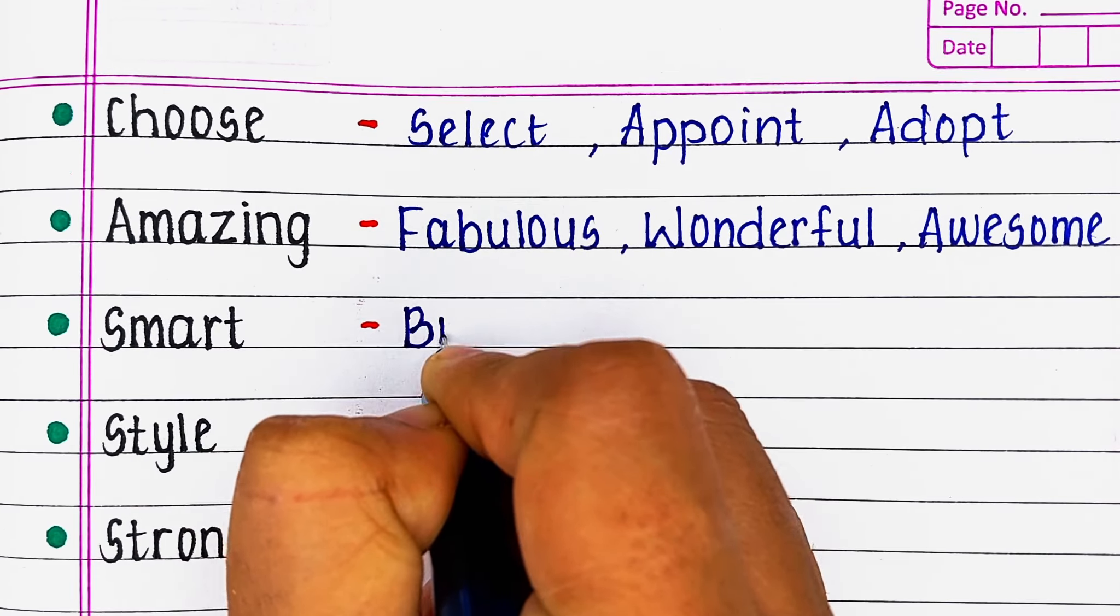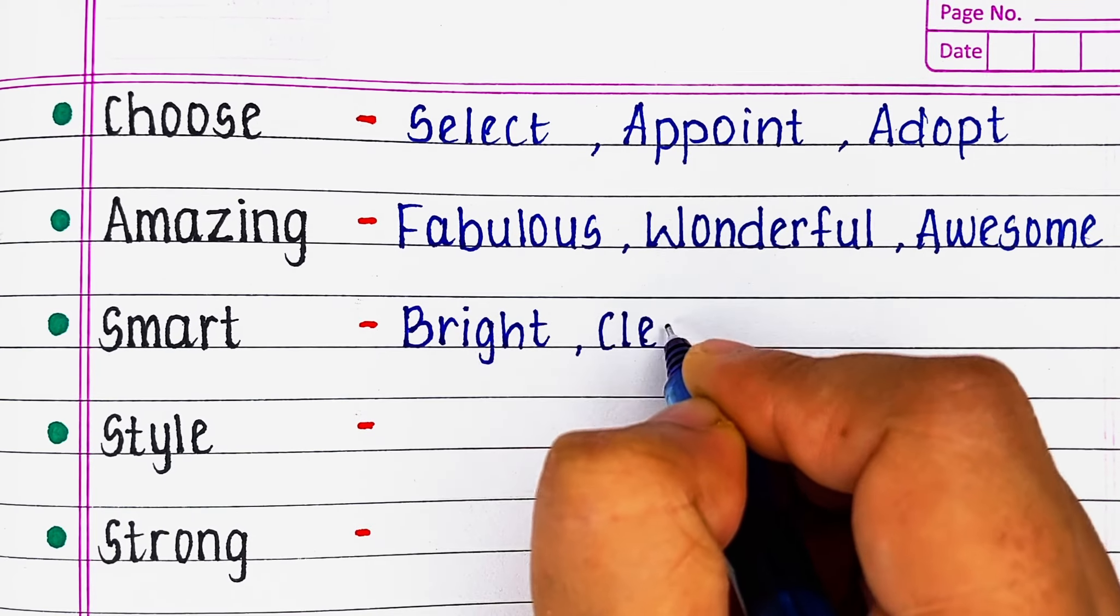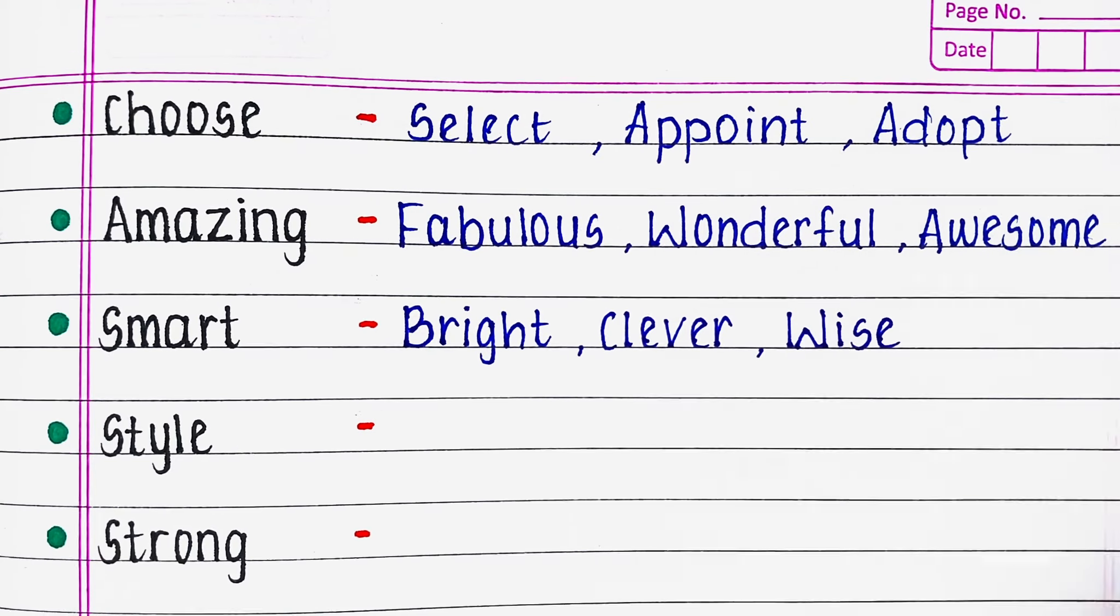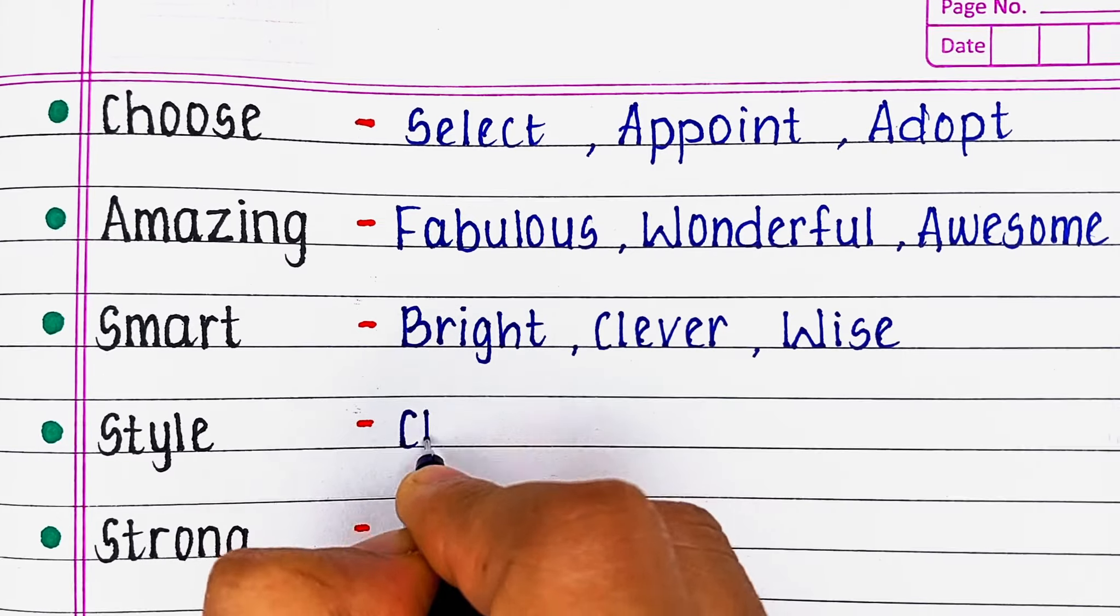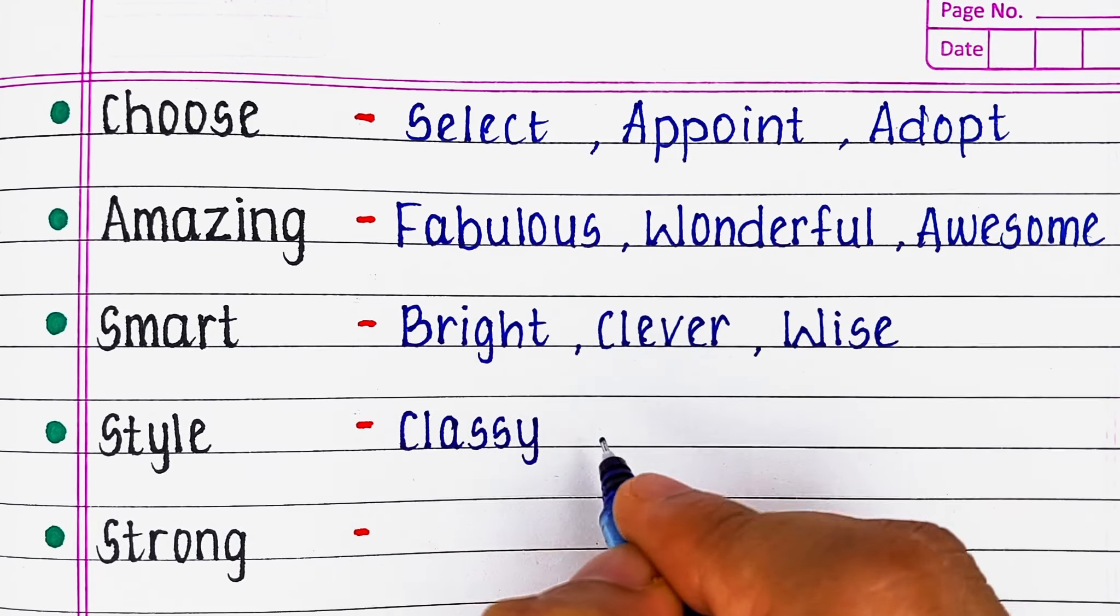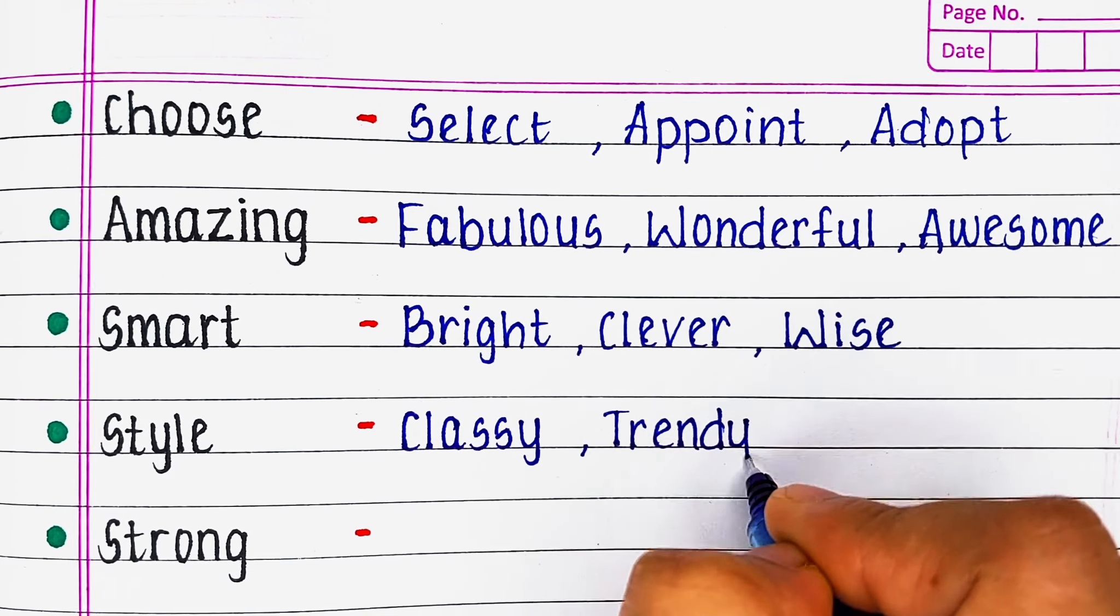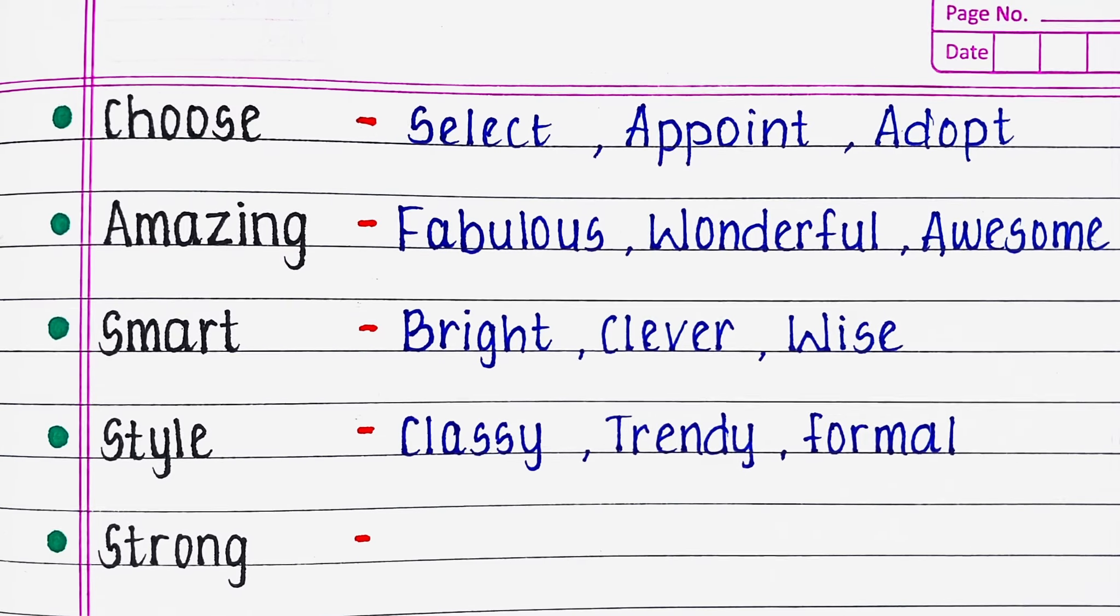Next word is Smart. Its similar meaning words are Bright, Clever and Wise. Next word is Style. Its synonyms are Classy, Trendy and Formal.